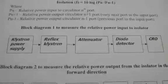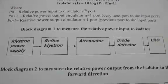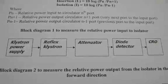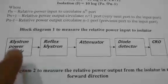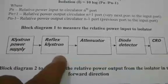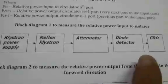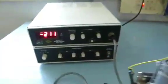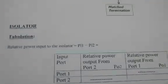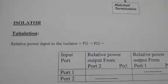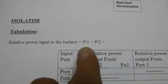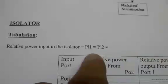First, we are going to measure the relative power input given to the isolator or circulator. The setup consists of a klystron power supply, a reflex klystron oscillator, an attenuator, a diode detector, and a CRO. Before connecting the isolator or circulator, we oscillate the klystron in a particular mode and we are getting an output of three divisions, which is noted as the relative power input.